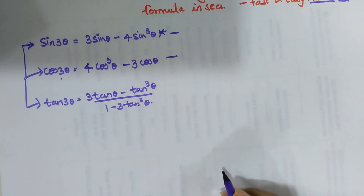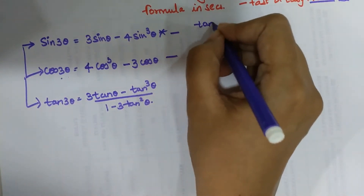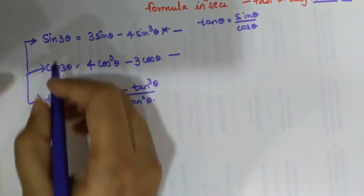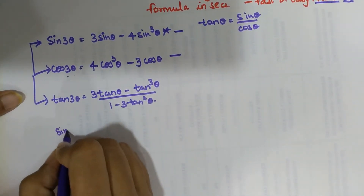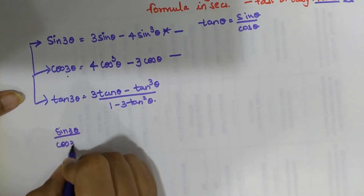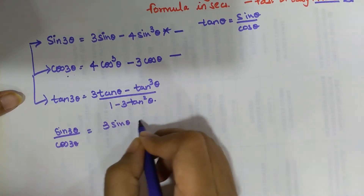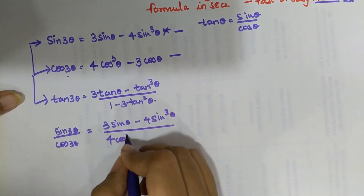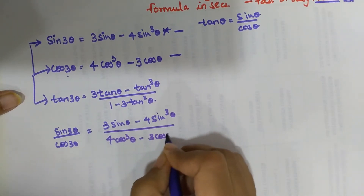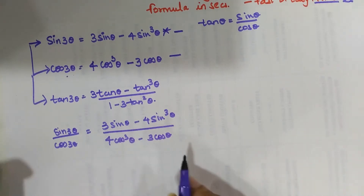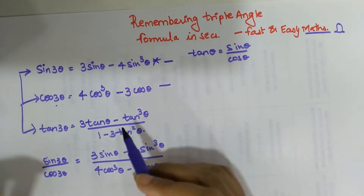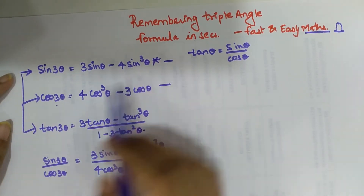The trick for tan 3θ is very simple. Since tan θ equals sinθ upon cosθ, we can write tan 3θ as sine 3θ upon cos 3θ, which equals 3 sinθ minus 4 sin³θ, all upon 4 cos³θ minus 3 cosθ. An important thing to remember: all triple angle formulas have the same trig functions — the sine formula has only sine, the cos formula has only cos, and tan 3θ has only tan in the answer.